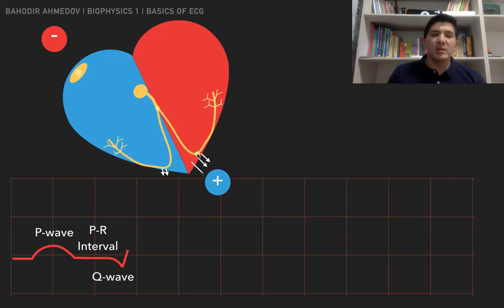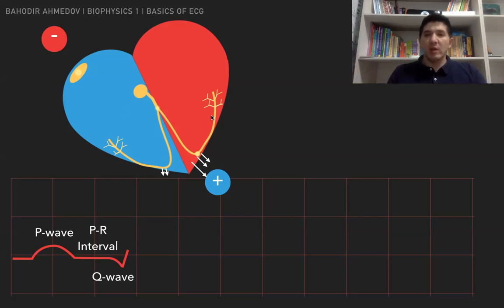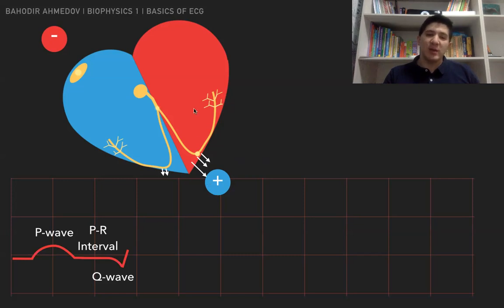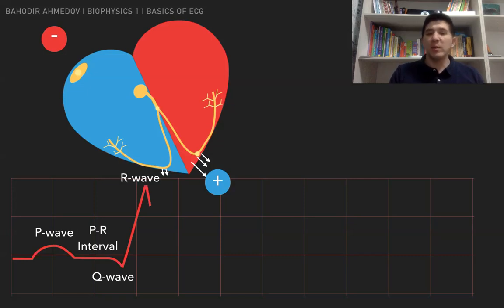Now we move the signal through the bundle branches further. At this stage, many dipoles are going to move in the direction of the positive electrode. You have movements in this direction and movements in this direction, but since the left ventricle is bigger than the right ventricle, the mean vector is going to point more towards the left — towards the positive electrode. The amount of charge generated by the larger left side is greater, so the mean vector points toward the positive electrode, creating a positive deflection. This is called the R wave.